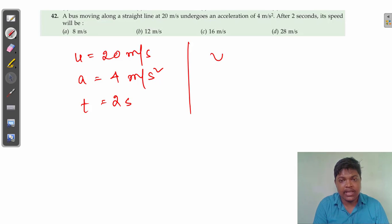The final speed is given by v, which equals u plus at. Here v is the final speed, u is the initial speed, a is for acceleration, and t is for time.